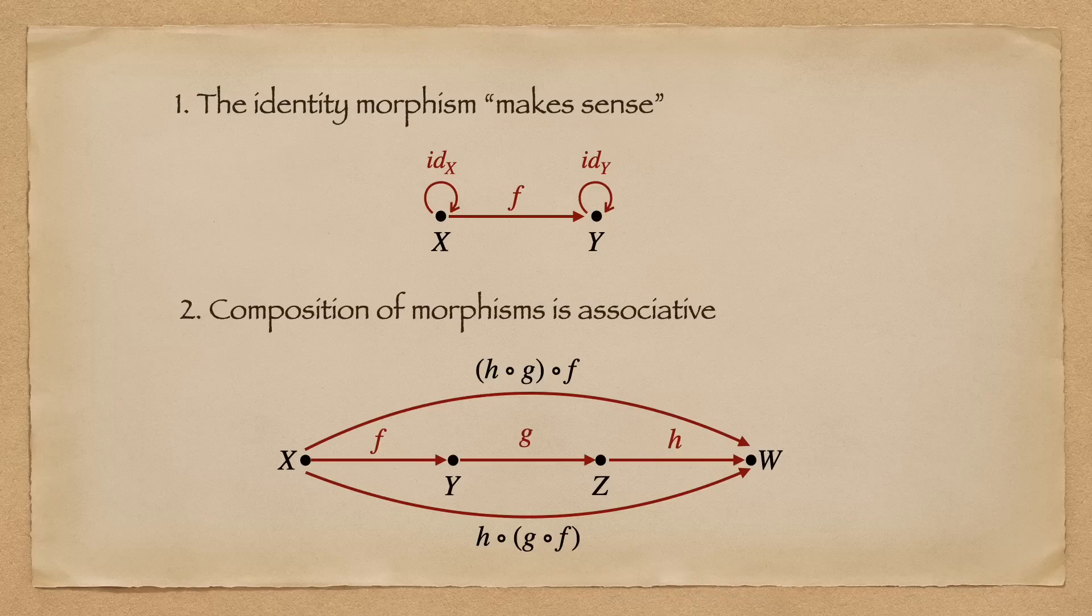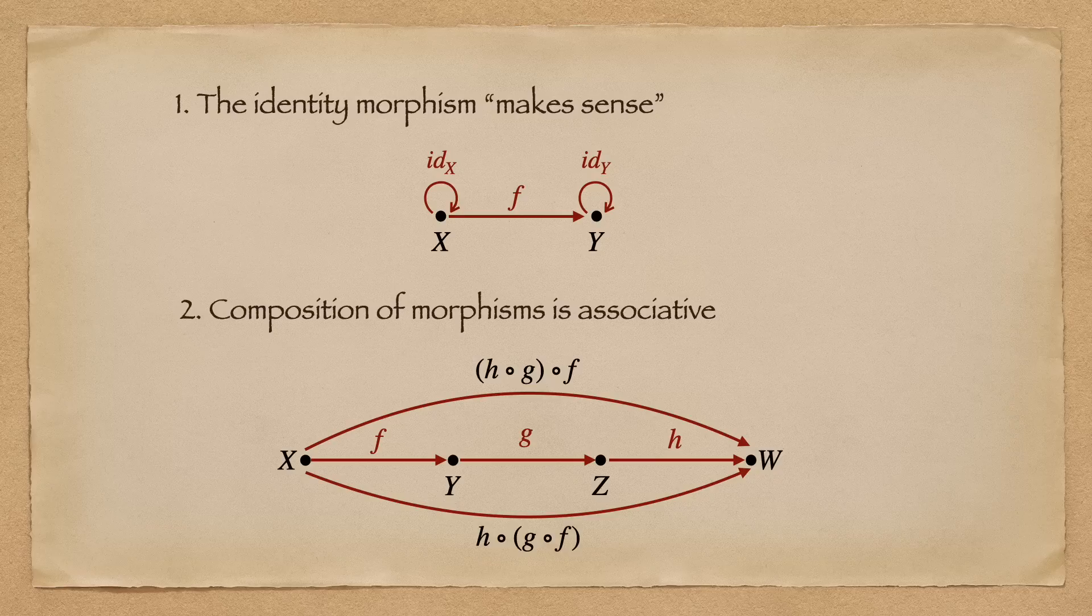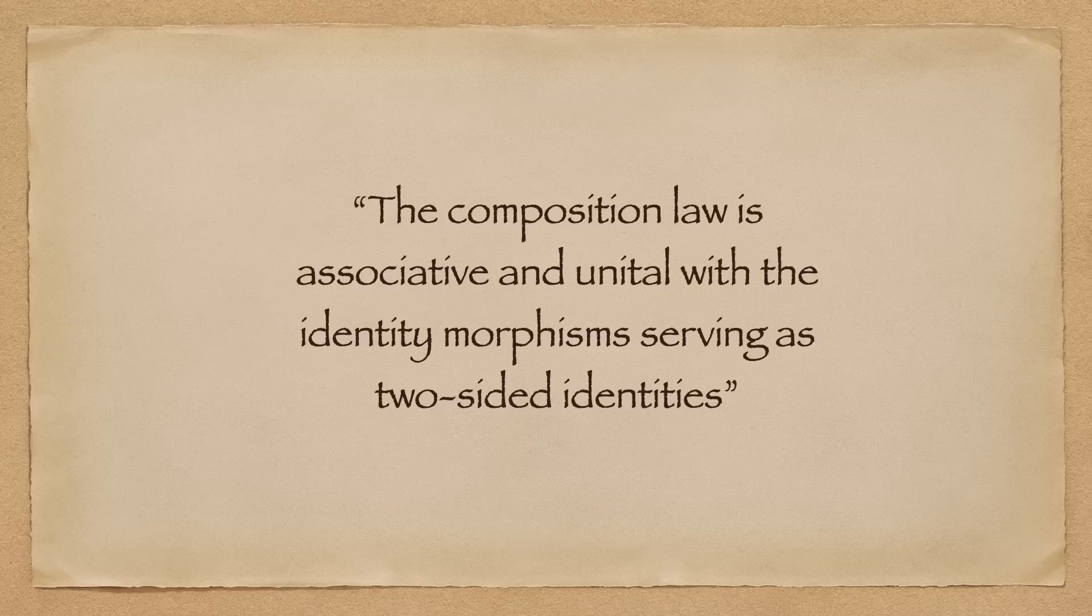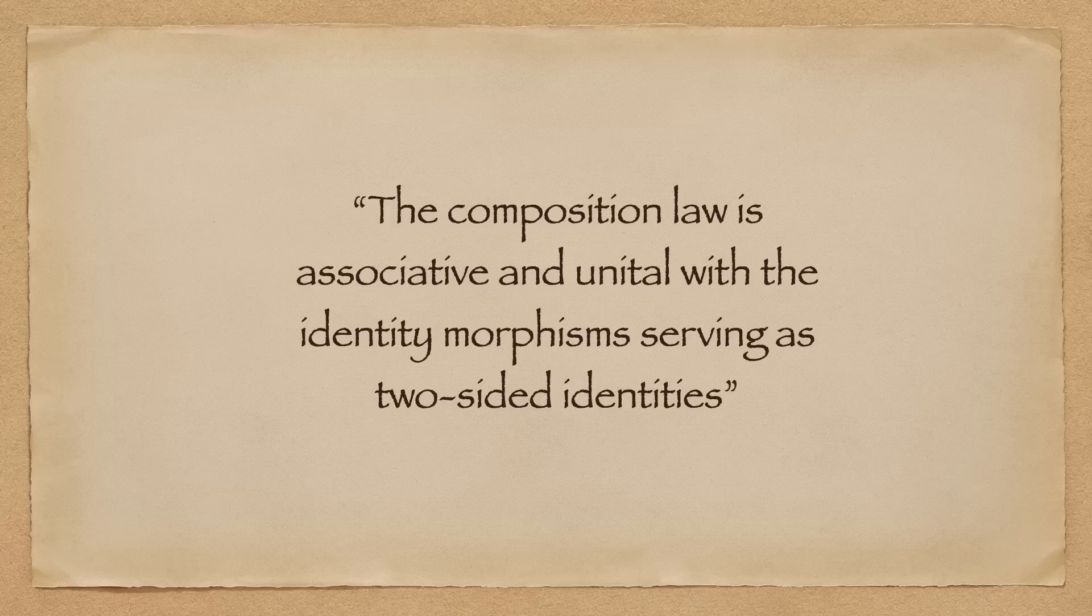And also, composition of morphism is associative, meaning the order of composition should not matter, whether we do h composed with g first or g composed with f first. In fancy language, we say the composition law is associative and unital with the identity morphisms serving as two-sided identities.